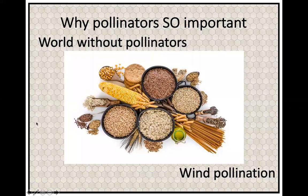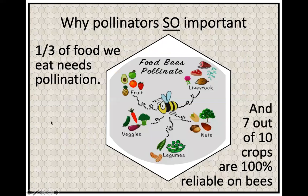Why are pollinators so important? This is basically what our world would look like without them — mostly wind-pollinated plants. Life would get pretty boring and bland. We would have a lot of carbohydrates but not much else. About one third of the food we eat needs some sort of pollination, and about 70% of those plants are 100% reliant on bees or other pollinators. Without insects and pollinators, we wouldn't get fruit, some vegetables, some legumes, a lot of our nuts, and even our livestock.